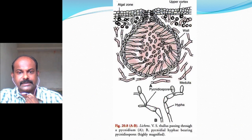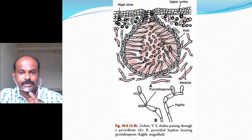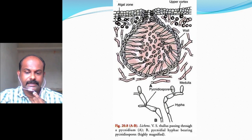This figure shows the structure of a pycnidium with pycniospores — a flask-shaped pycnidium with pycnidiospores formed inside.